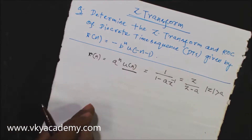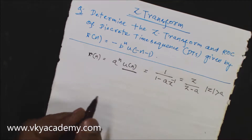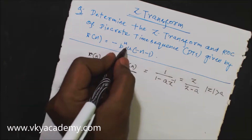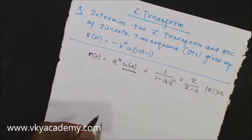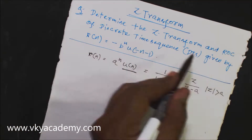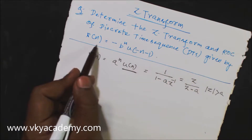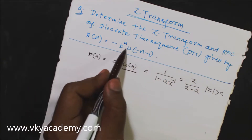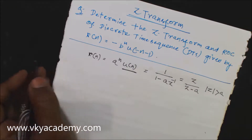Today, we will solve one more question on infinite duration sequence. The question is: determine the Z-transform and ROC of the discrete time sequence given by x(n) = -b^n u(-n-1). Let us solve this question.